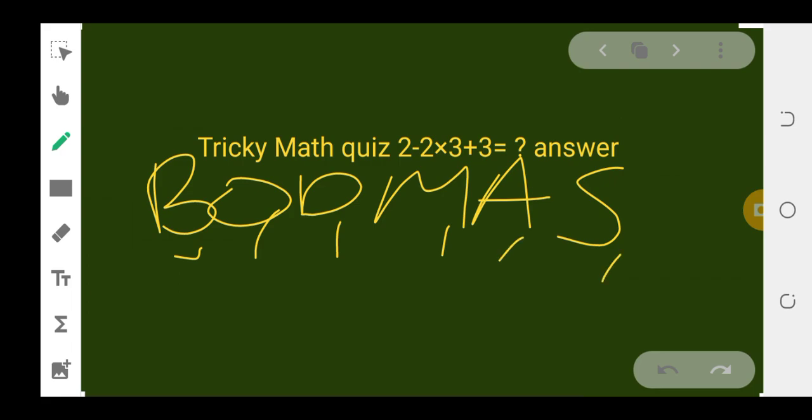If you look at the quiz carefully, you'll see there's no bracket. Following the order of BODMAS, the next thing is division, and there's no division. The next thing is multiplication. Which expression are we multiplying? It is -2 × 3.